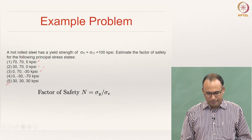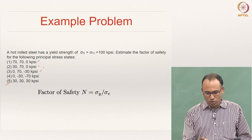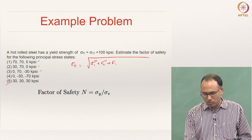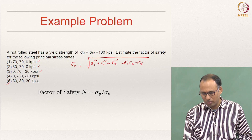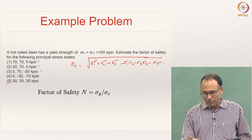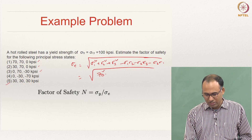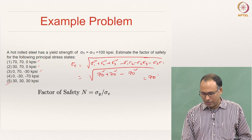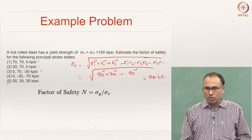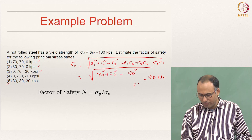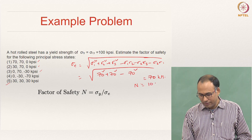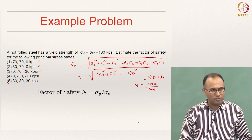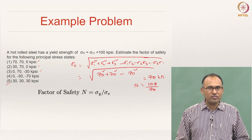These are all principal stresses you are given. You can calculate your equivalent stress sigma_e as the square root of (sigma_1² + sigma_2² + sigma_3² − sigma_1·sigma_2 − sigma_2·sigma_3 − sigma_3·sigma_1). For the first case, that works out to 70 kPsi, and the factor of safety will be 100 divided by 70, which is approximately 1-point-something.